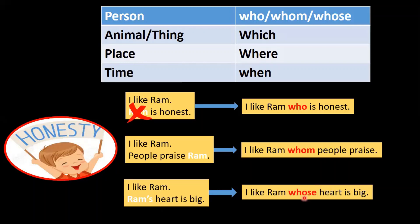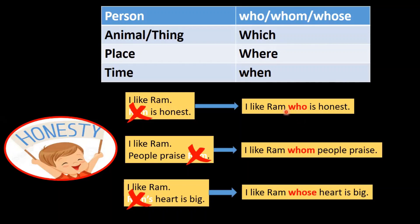One more thing: when we write the answer, we do not repeat the noun. For example, we never say 'I like Ram who Ram is honest.' So the relative pronouns who, whom, and whose replace the subject they refer to. Who replaces Ram, whom replaces Ram, and whose replaces Ram's.